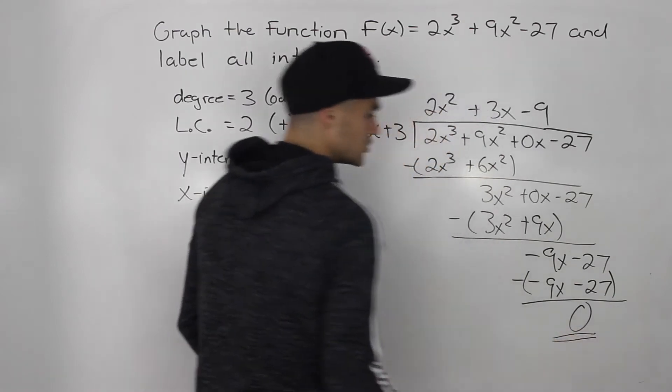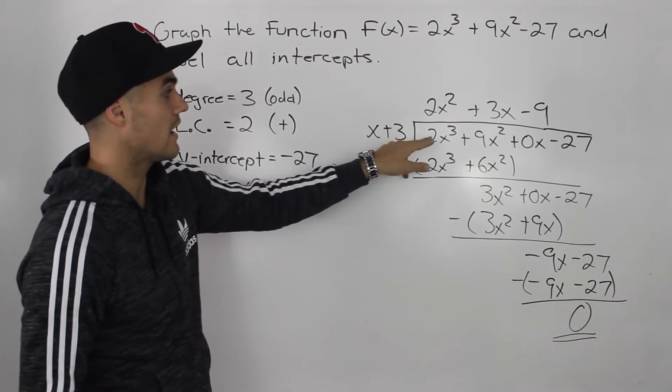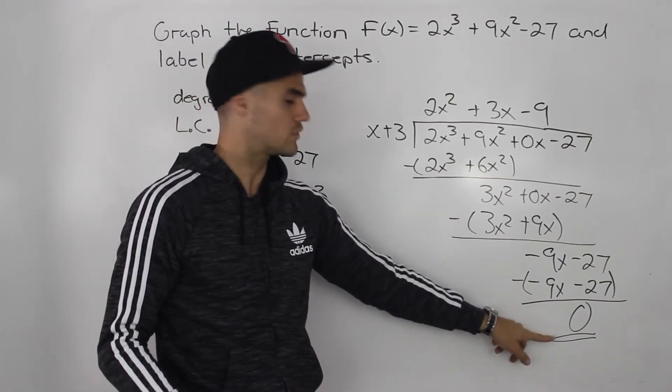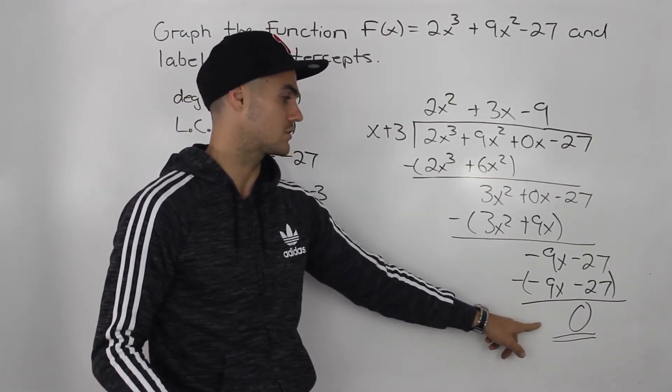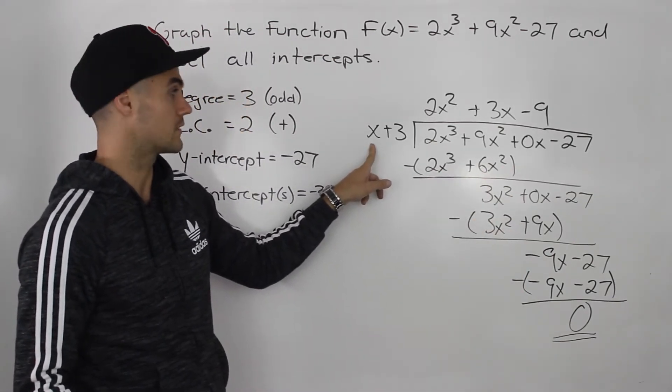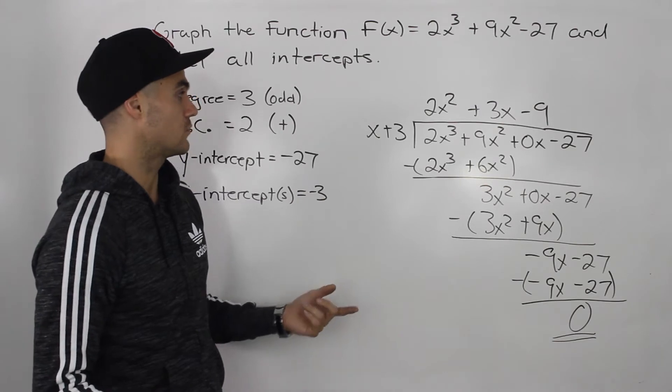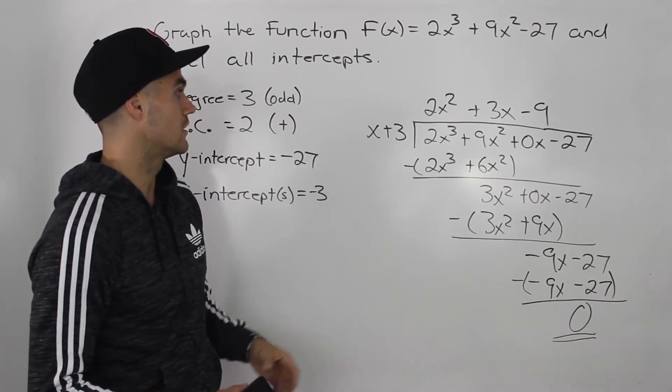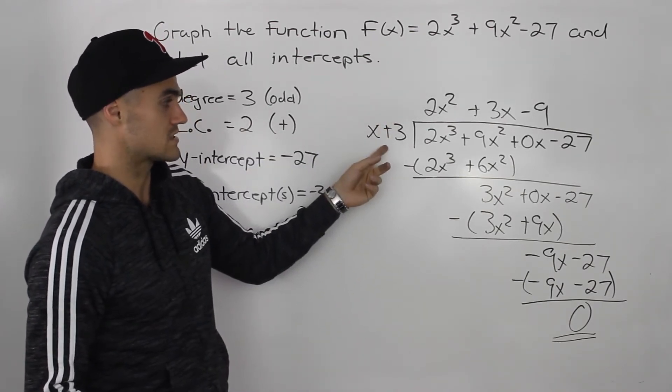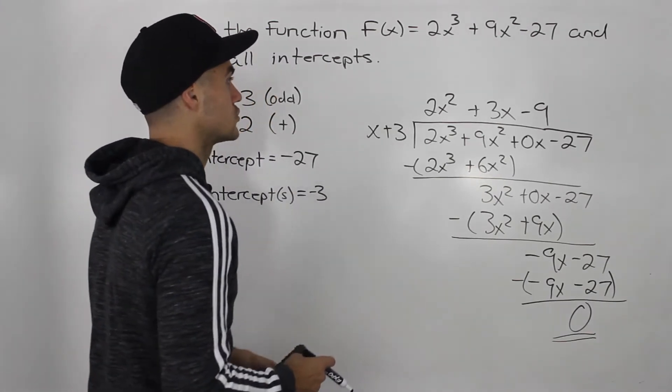We know that we should be getting a remainder of 0 because x + 3 is a factor. So when we divide the polynomial that we're working with with a factor, you should always get a remainder of 0. If you're not getting a remainder of 0 here, you did something wrong. Most likely with the algebra, but you may have miscalculated that factor. However, if you do plug in negative 3, you do get 0. x + 3 is a factor. And we got this remainder of 0. So we can be pretty confident that we are on the right track.